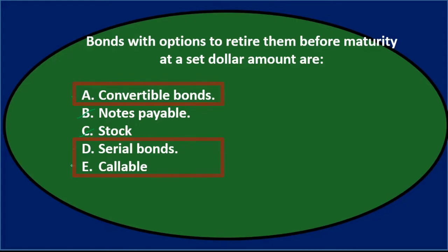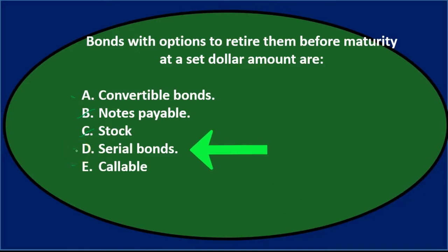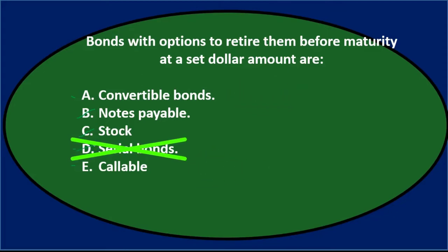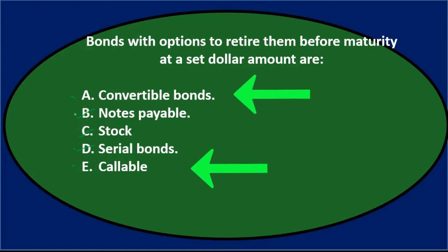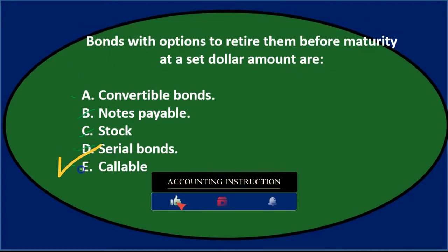Reading through again: bonds with options to retire them before maturity at a set dollar amount — convertible bonds, serial bonds, or callable bonds. Between those three, serial bonds sounds least likely because callable or convertible suggest something happening before the maturity date. Crossing out D, and between convertible and callable, the answer is E — callable bonds.